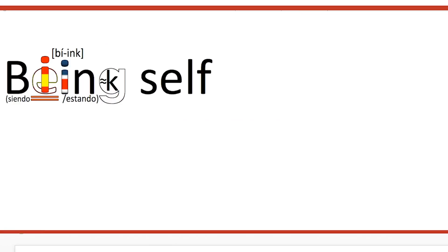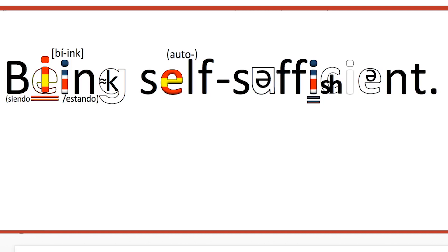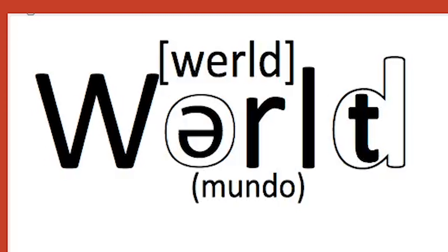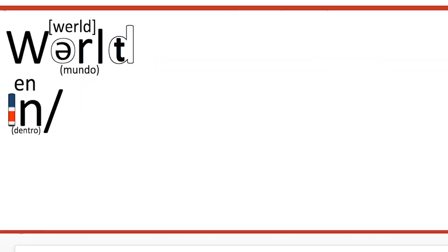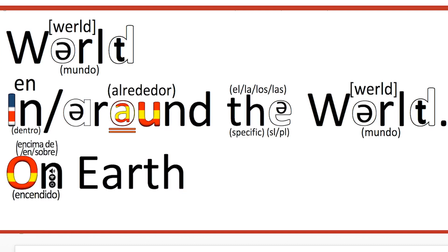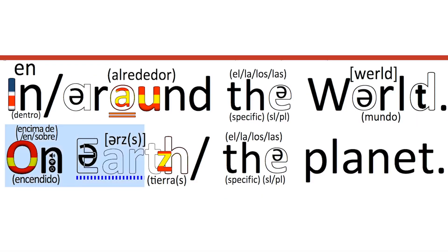Being self-sufficient — maybe having a garden where you can grow your own vegetables — is a utopic idea. Many students make mistakes when talking about the world. The pronunciation of the word is difficult: world. You have to really go into your throat to make this world sound. We say in or around the world, or we say on earth, or on planet earth. You can say on earth, on planet earth, or on the planet.